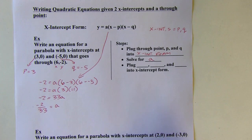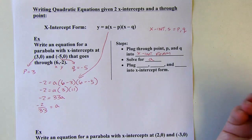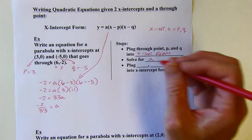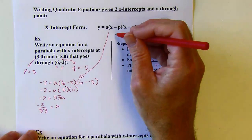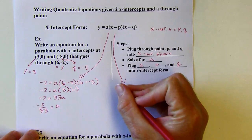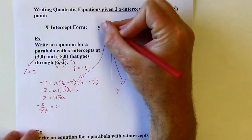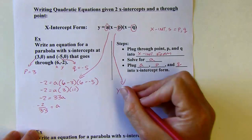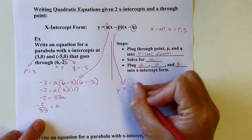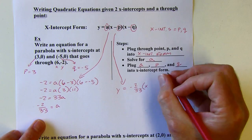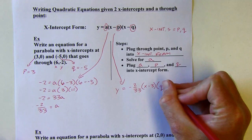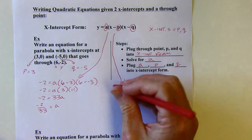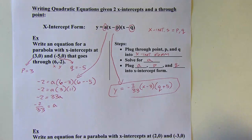So now we're ready to go. I'm going to plug in the three things that I know — A, P, and Q — into x-intercept form. A is negative 2 over 33, P was 3, and Q was negative 5, so I'm subtracting negative 5, which I'd write as plus 5 in my final answer. You can multiply this all out to put it in standard form, but I'm just going to write it in x-intercept form.